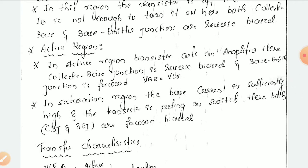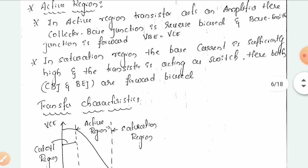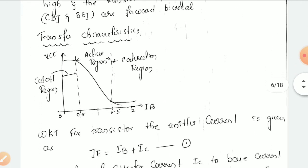In saturation region, the base current is significantly high. The base current is high and the transistor is acting as a switch in the saturation region. Here both — base to collector junction and base emitter junction — are forward biased, and then it is acting as a switch at that particular point.